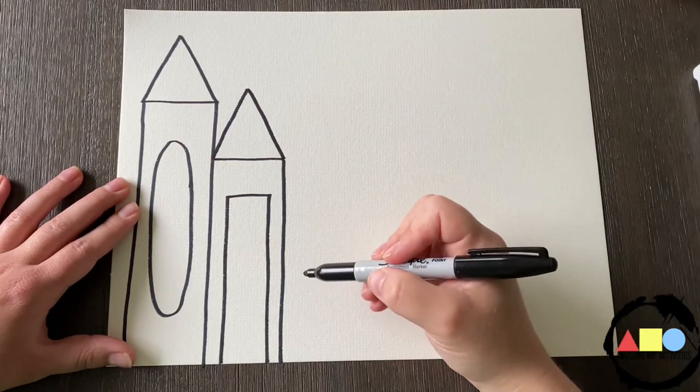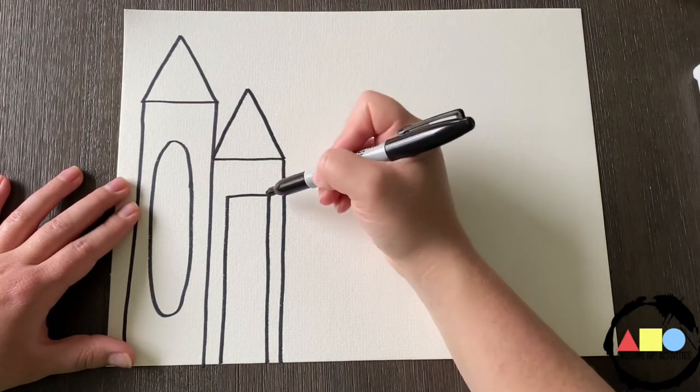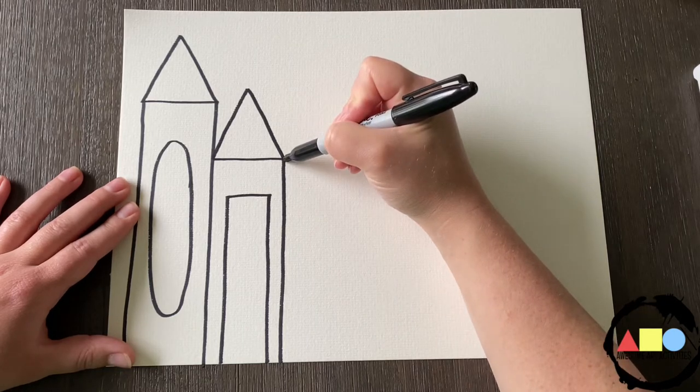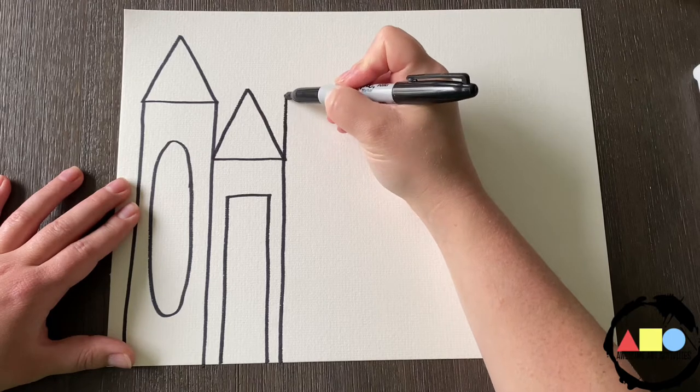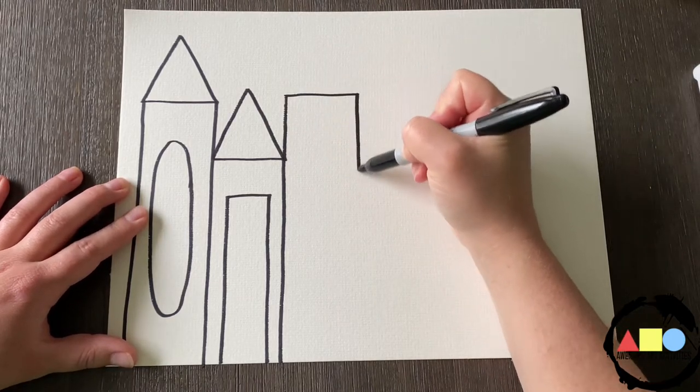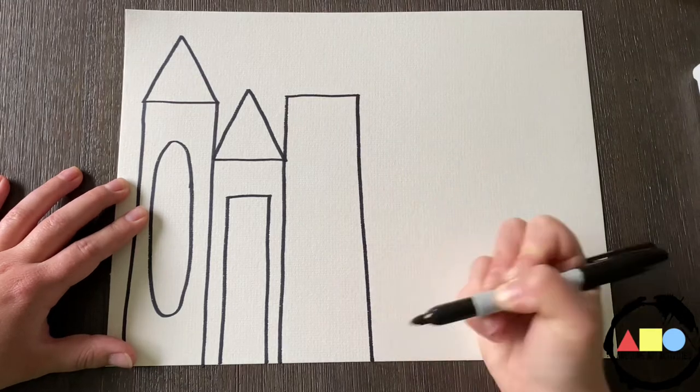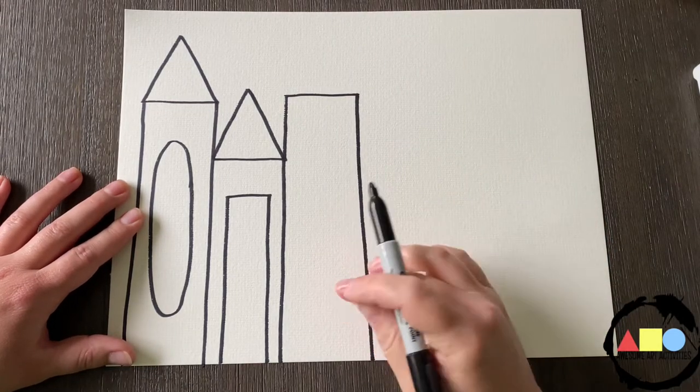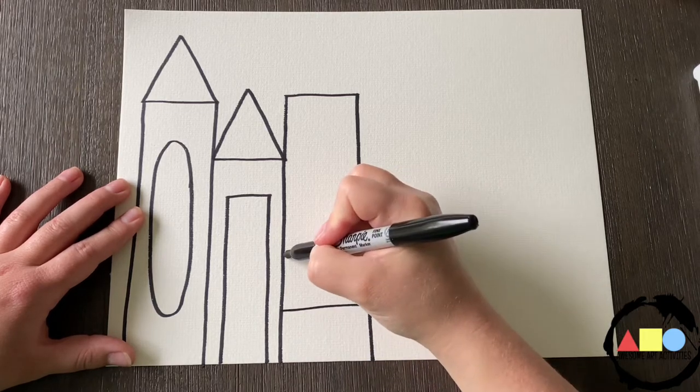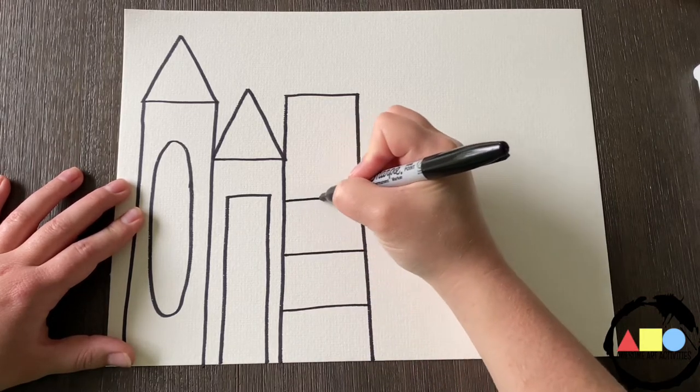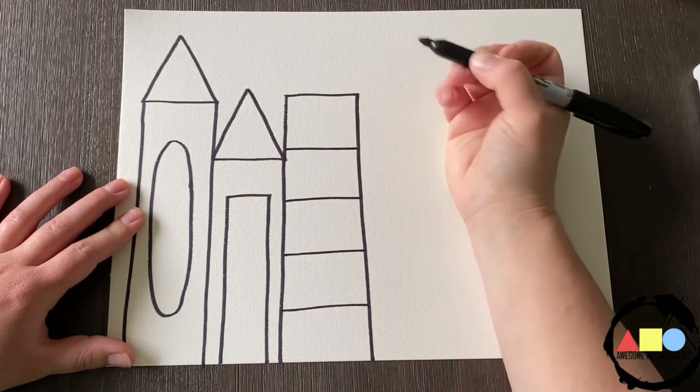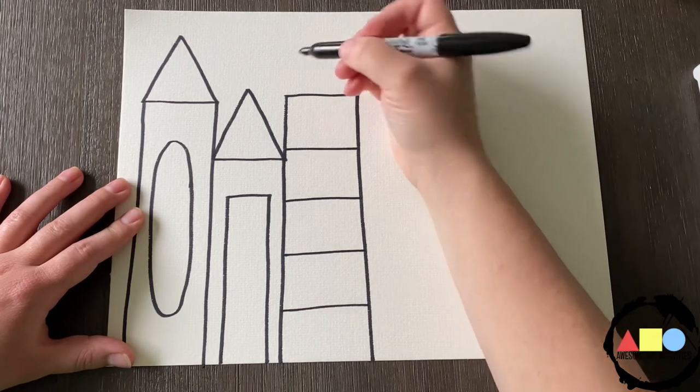Now we're going to draw a triangle on top of this rectangle. Next, we're going to draw a building that is taller than this one. So this is also going to be a rectangle. I'm going to start about right here. I'm going to go up, over, and down. This time inside this rectangle, we're going to draw horizontal lines. Now at the top, we're going to draw our triangle again.